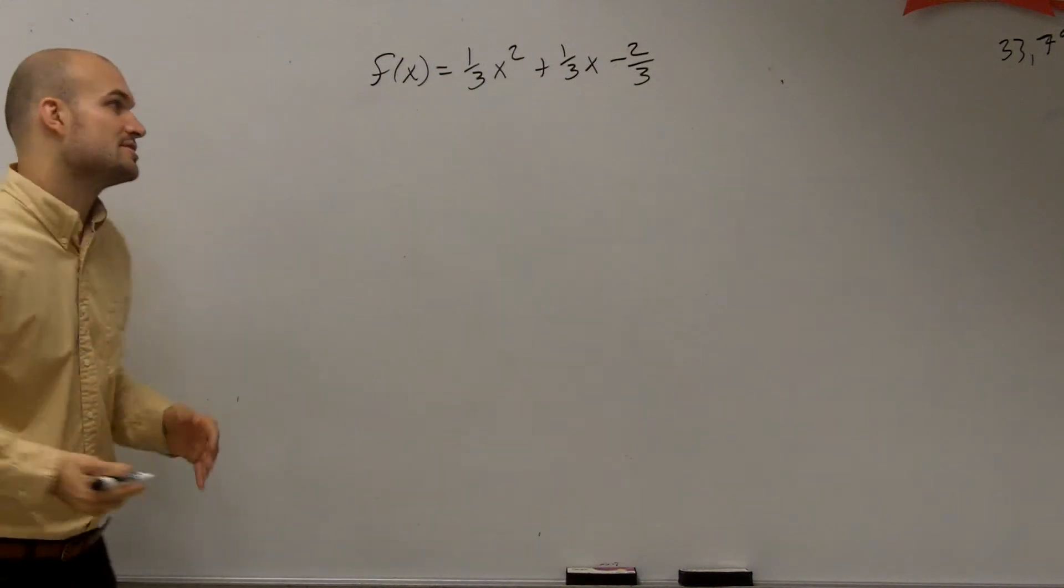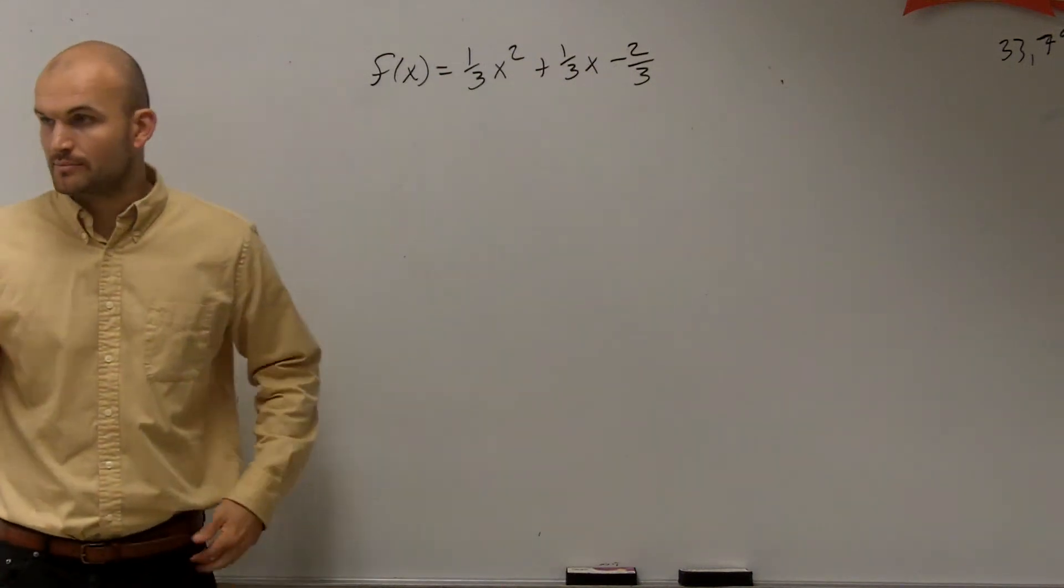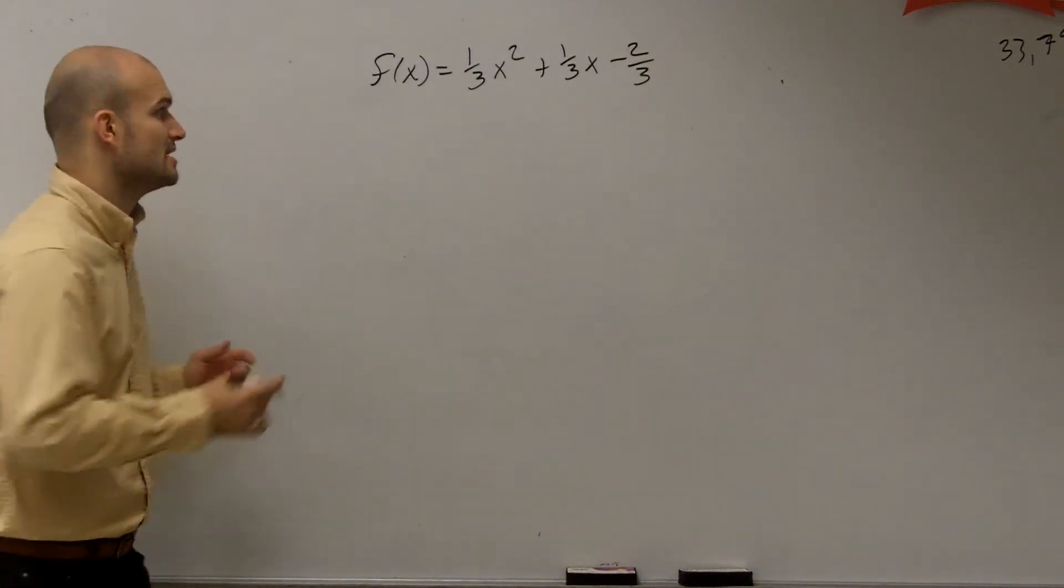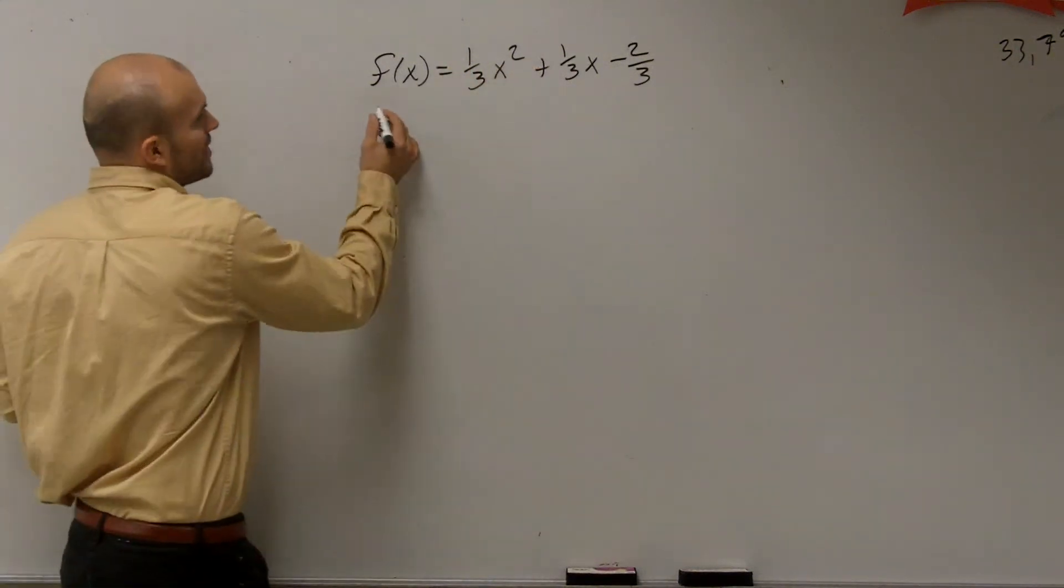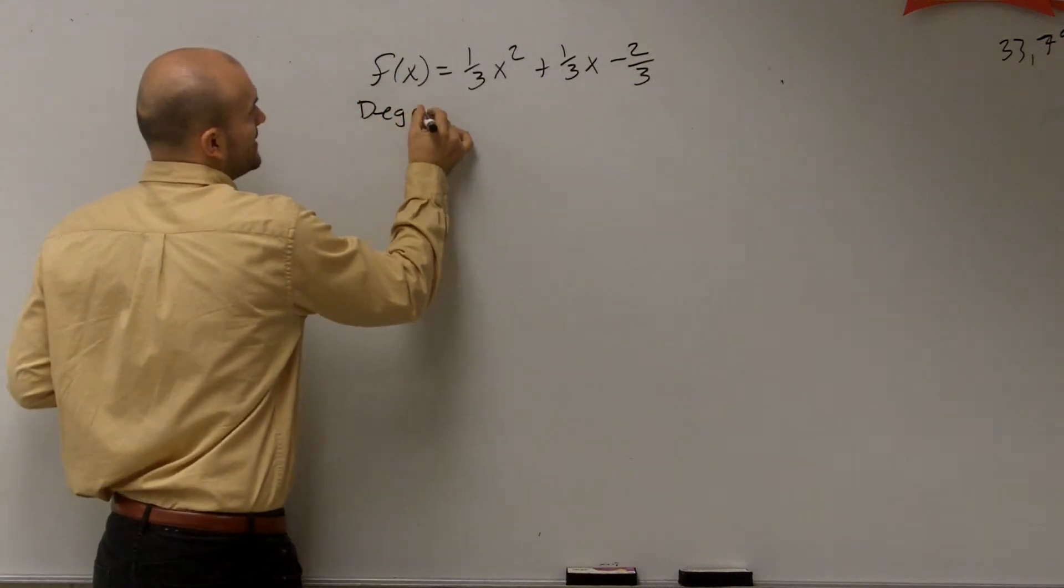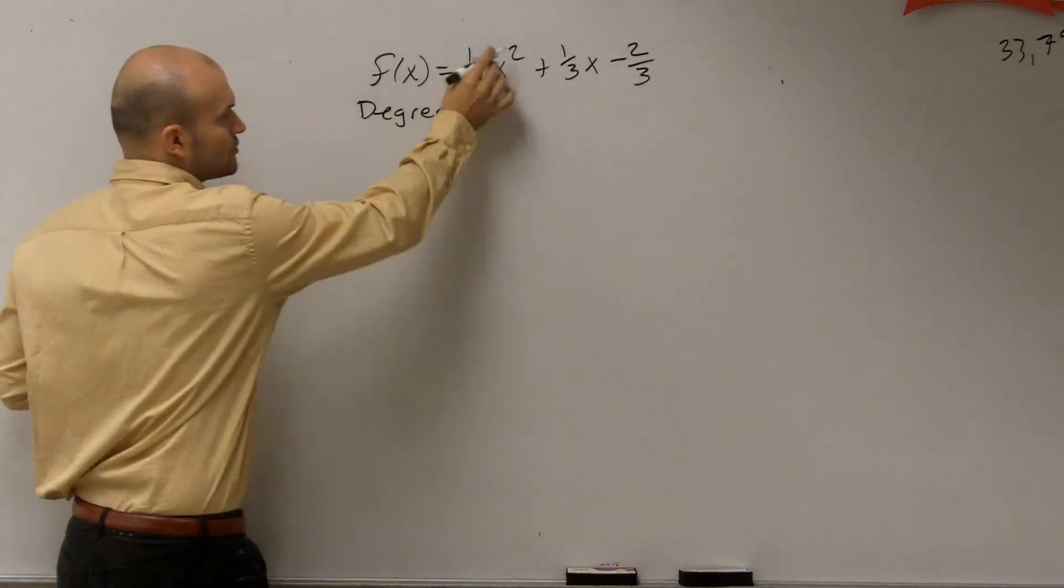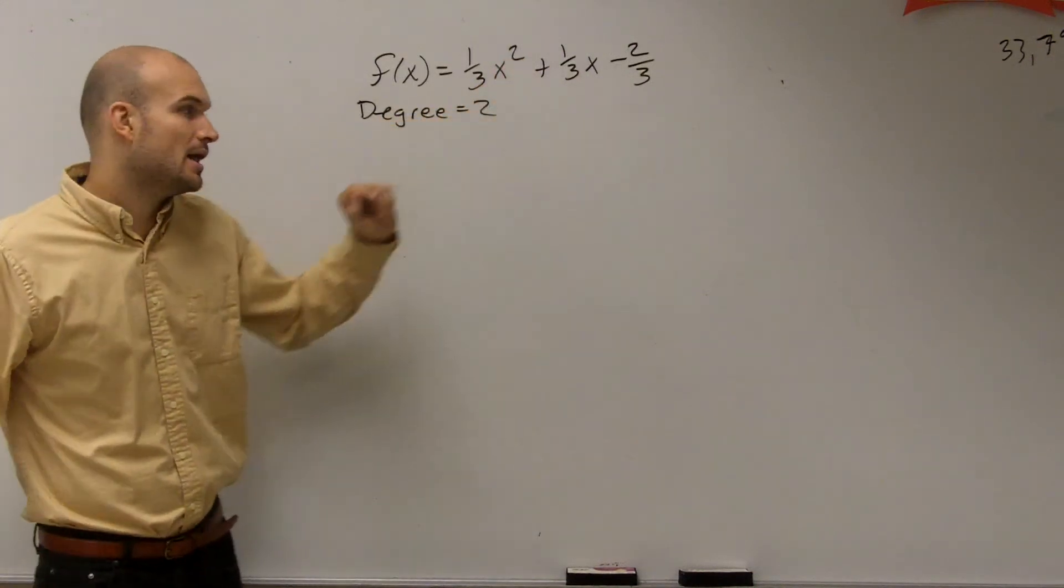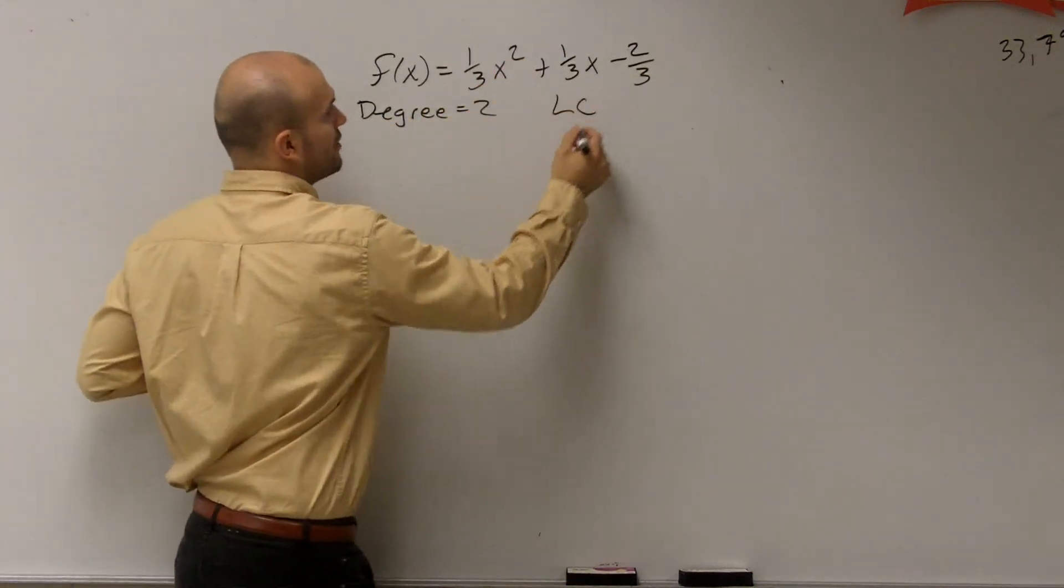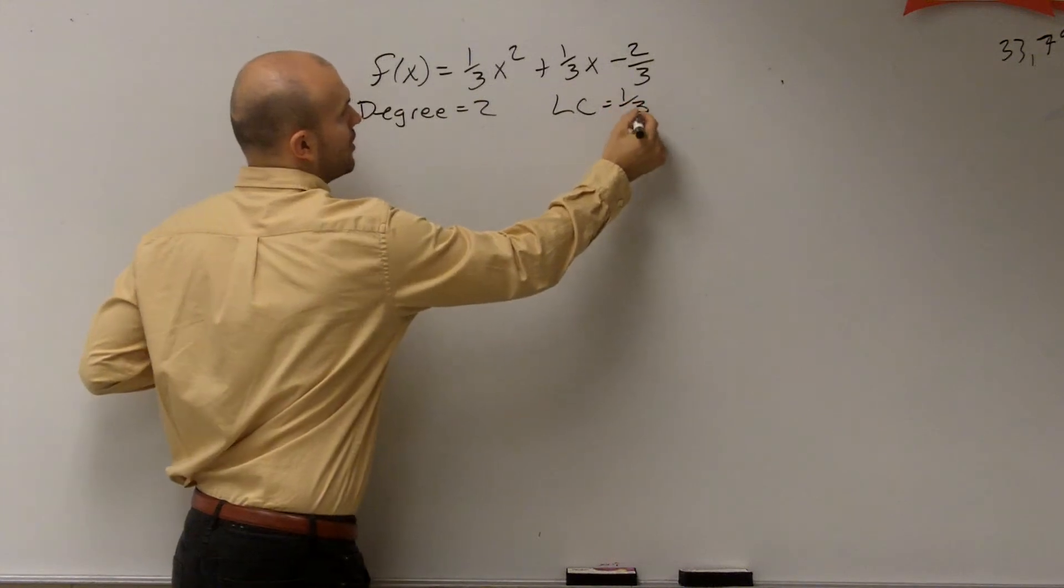When looking at the end-behavior, we're going to be looking at doing the leading coefficient test. To look at that, we need to look at the leading coefficient and the degree. It's helpful to write that out. So my degree in this problem is equal to 2. That's the highest degree or highest exponent of my polynomial. Then the leading coefficient is equal to 1/3.